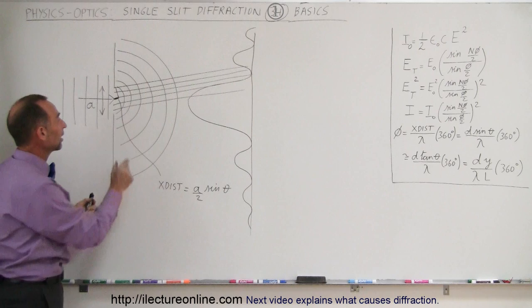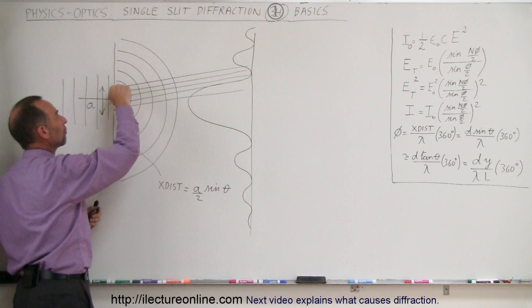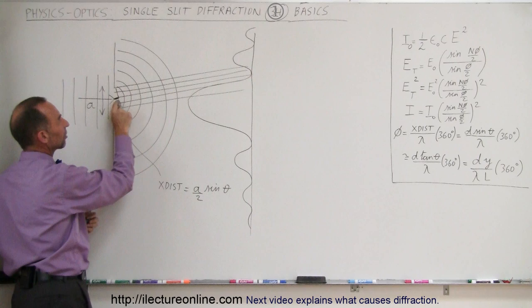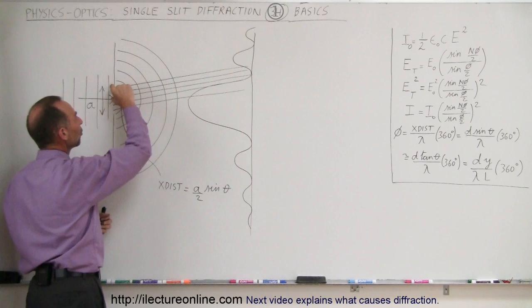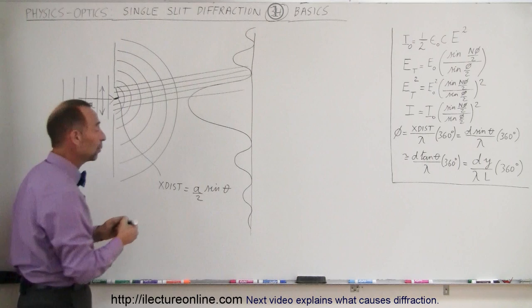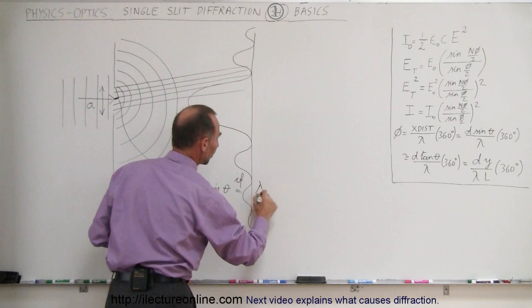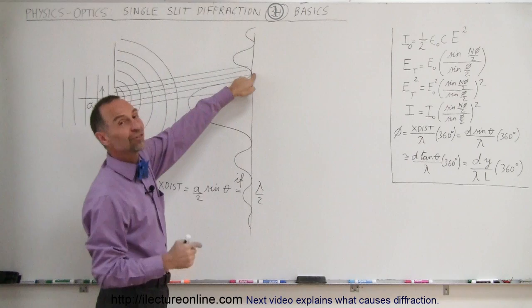The extra distance traveled by the portion of the beam halfway through the slit — going from the top of the slit to the midpoint, which is half the width — compared to the portion at the very top, is half the width of the slit times sine of theta. If that extra distance equals exactly a half-wavelength, then those two portions destructively interfere with each other, and therefore you see a minimum at that location. That's the basic concept.